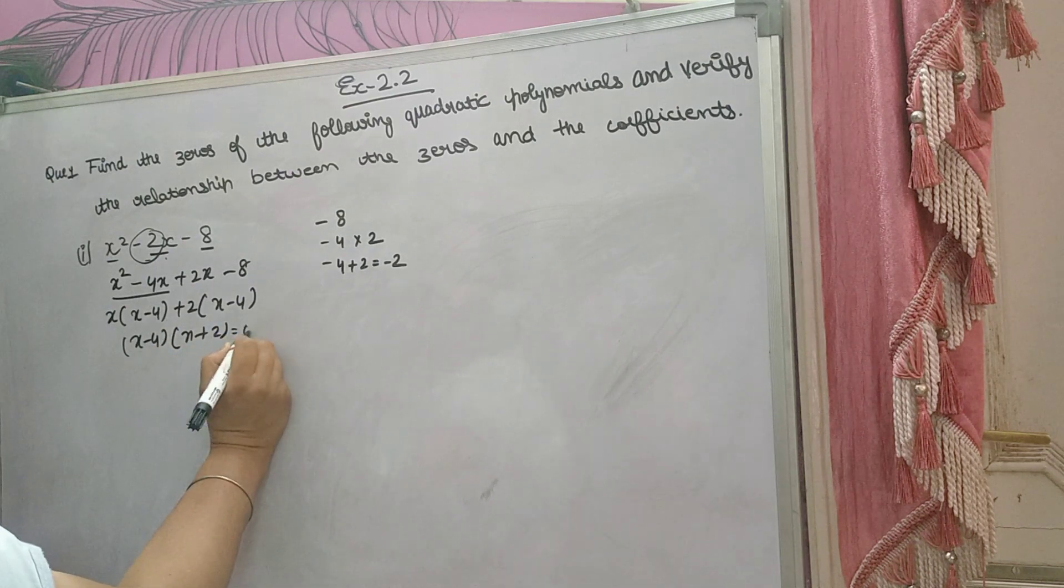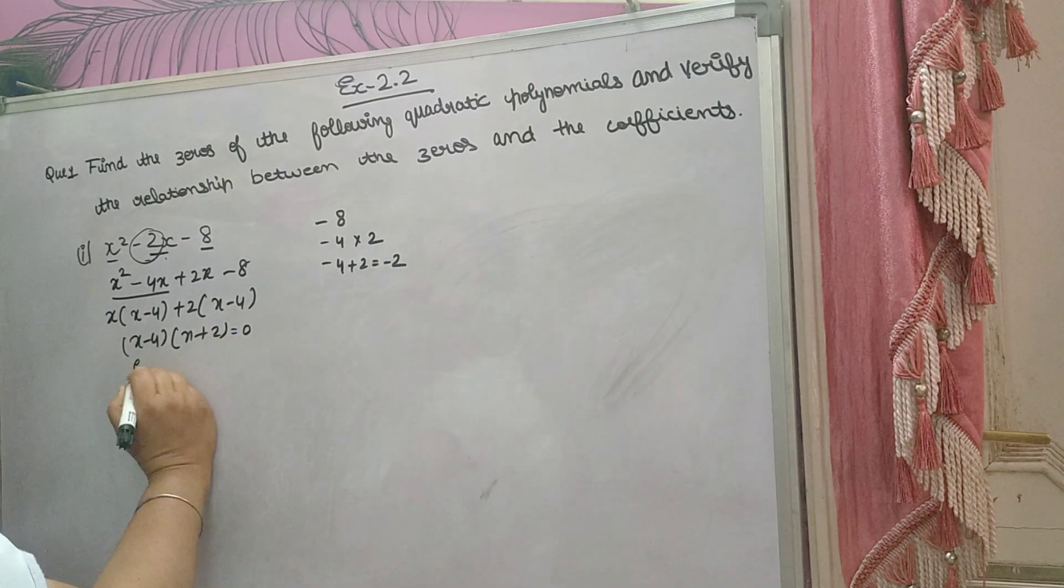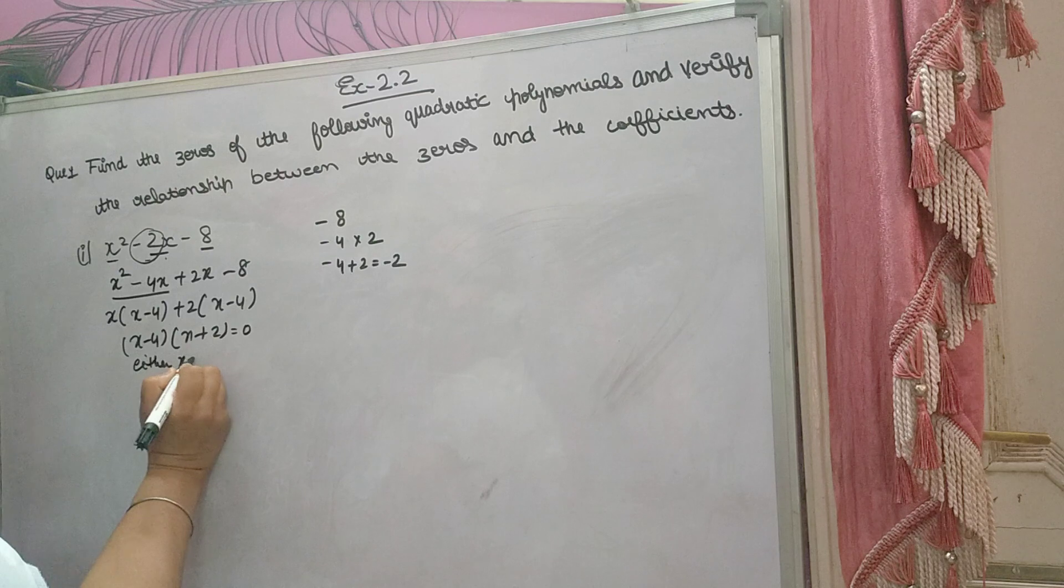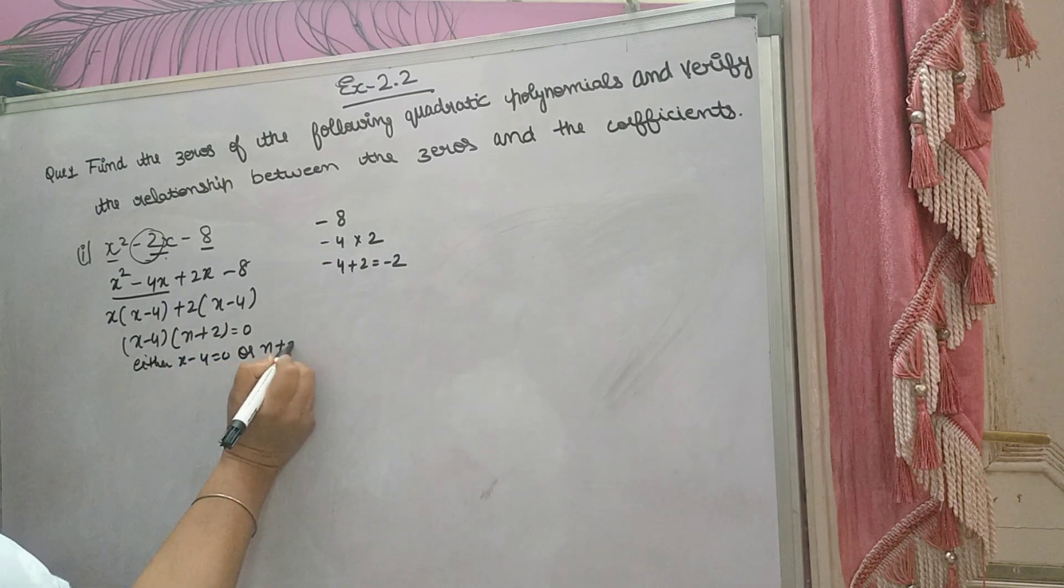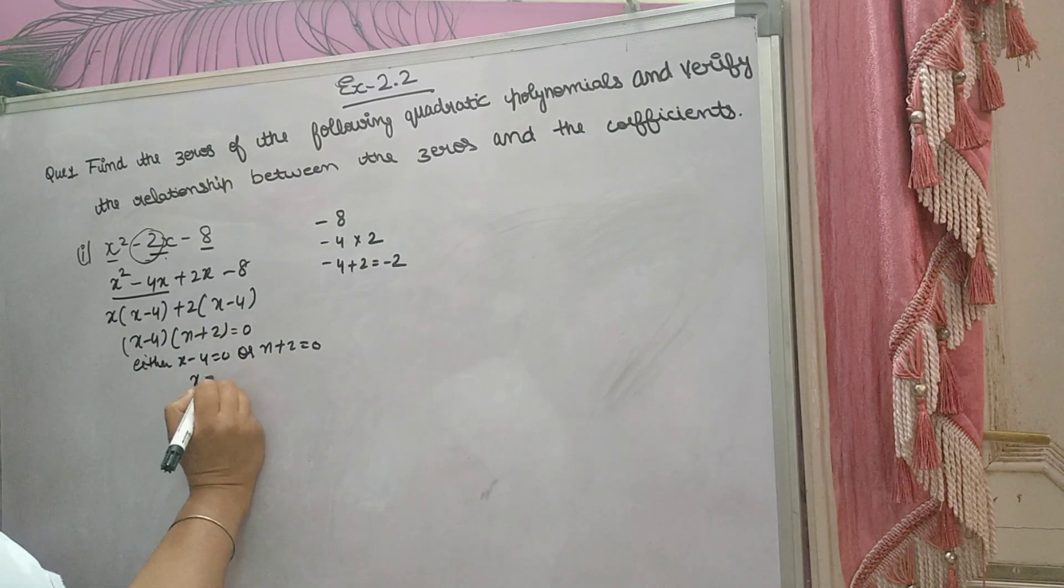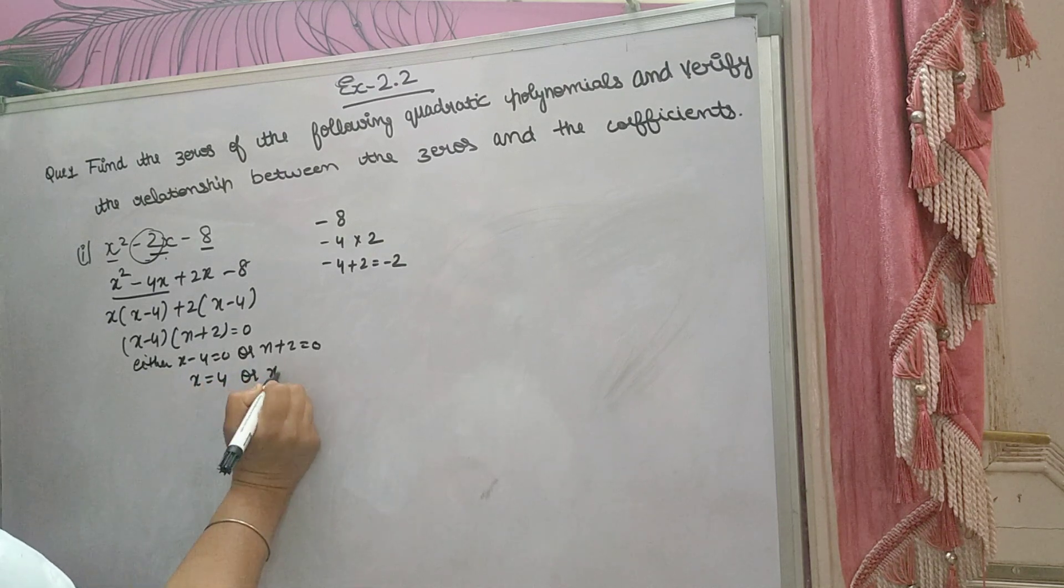Now for zeros you have to put it equal to 0. Either x minus 4 is equal to 0 or x plus 2 equals 0. From here you will get x is equal to 4 or x is equal to minus 2.